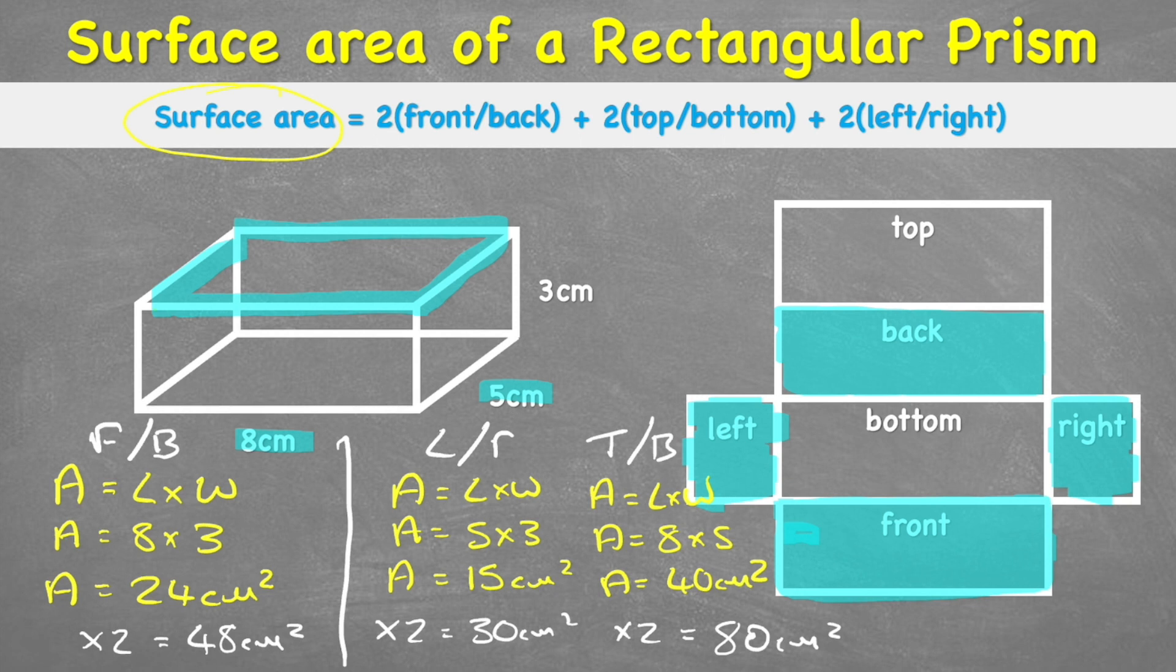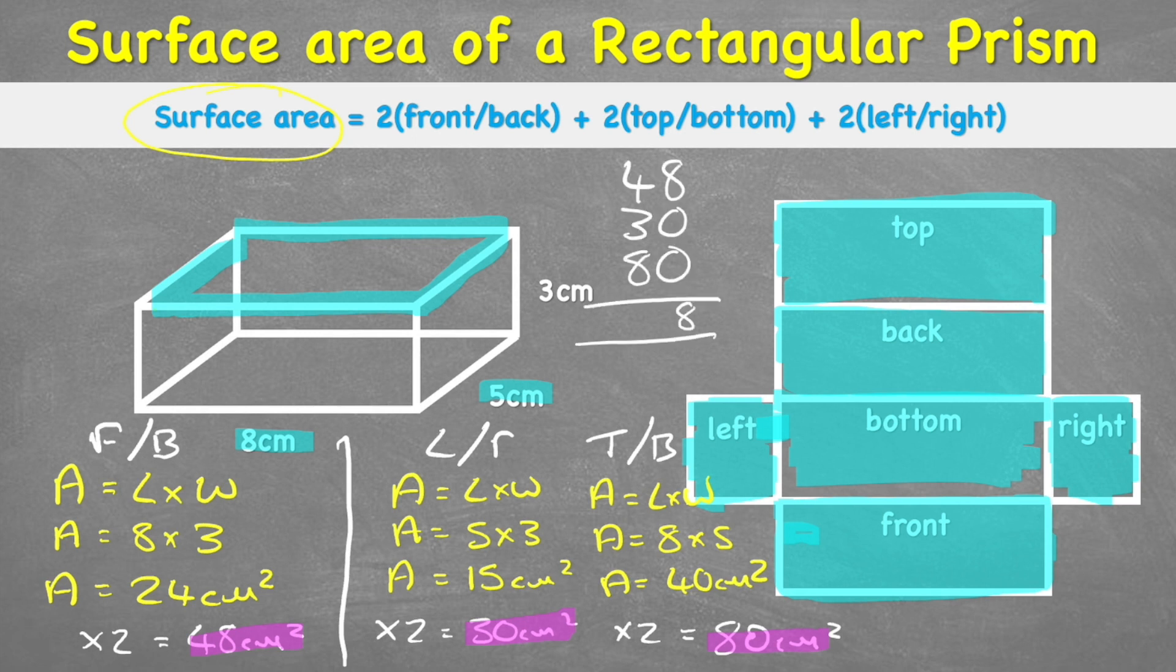So now we have measured the surface area of all the individual surfaces. What we've got to do now is pop them all together to get our total surface area. So I'm going to add my 48 centimeters to my 30 to my 80. Do that in my column addition over here. And that gives me a total of 158 centimeters squared. So my surface area is equal to 158 centimeters squared.